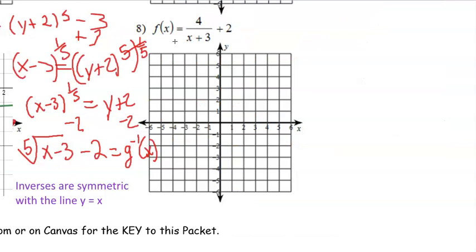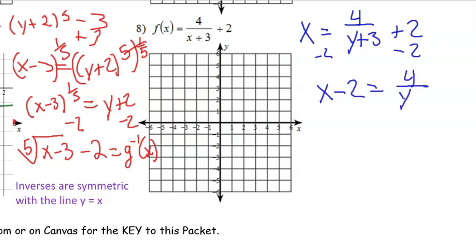Let's look at this one. We have f(x) equals 4 over x plus 3 plus 2. We want to find the inverse of this one. So we're going to switch the x and the y and solve for the new y, which was the old x. The main reason why we do that is so we don't have to rewrite f(x), f inverse, and all that stuff. So we're going to subtract 2 from each side. x minus 2 equals 4 over y plus 3.